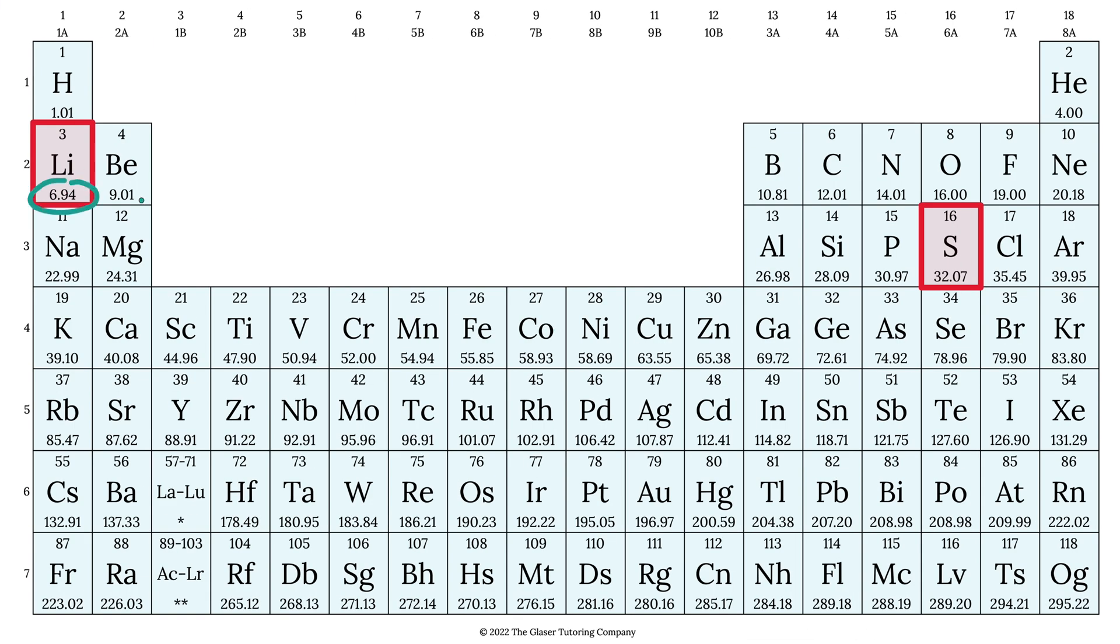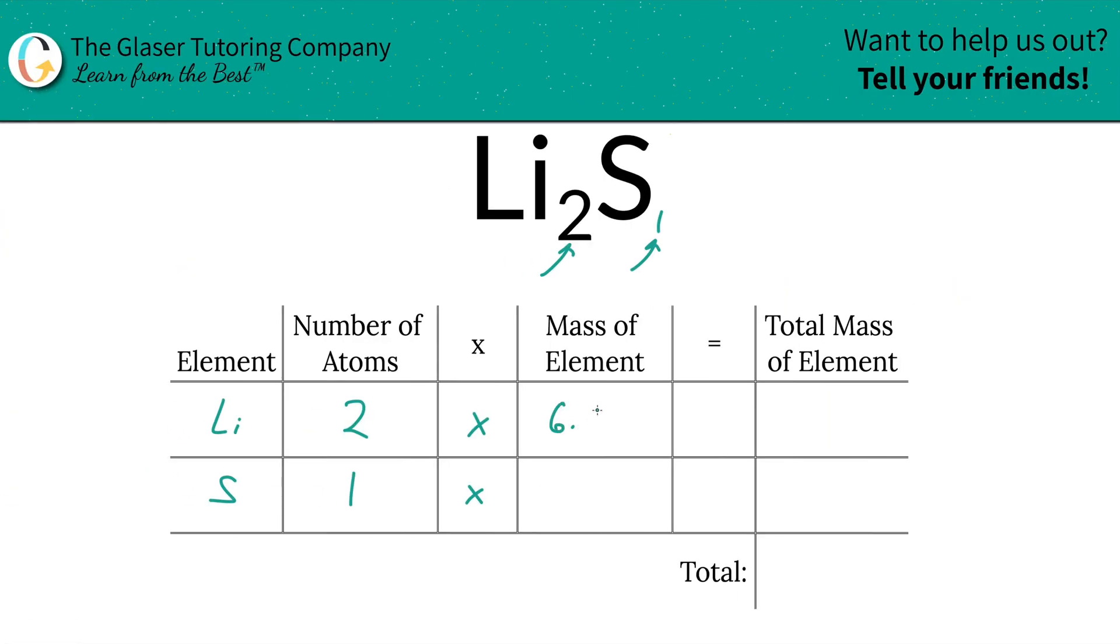So we're going to go to the periodic table. Lithium is 6.94, sulfur is 32.07. And we're going to write it down. So 6.94 for lithium, 32.07 for sulfur.